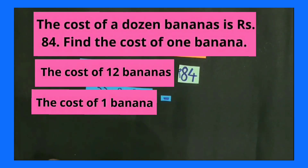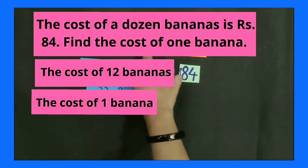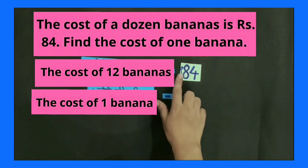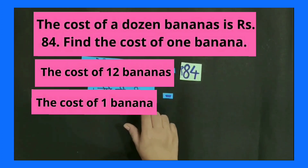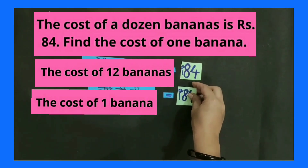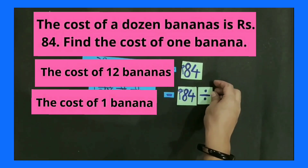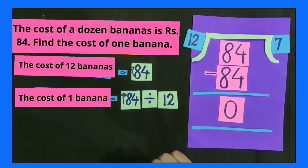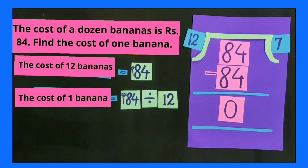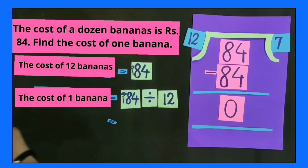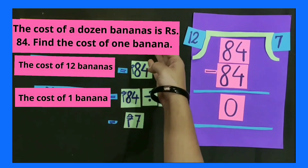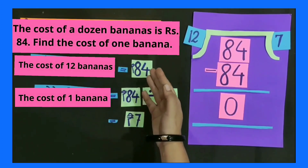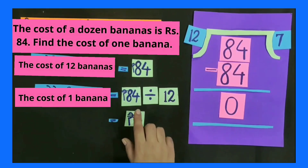Now let's discuss it in written form. The cost of a dozen bananas is rupees 84. Find the cost of 1 banana. As you already know, there are 12 bananas in one dozen, so the cost of 12 bananas is rupees 84. To find the cost of one banana, we divide rupees 84 by 12 and get the answer 7. The cost of one banana is rupees 7. When the cost of multiple things is given and we have to find the cost of one thing, we can find this cost by division.